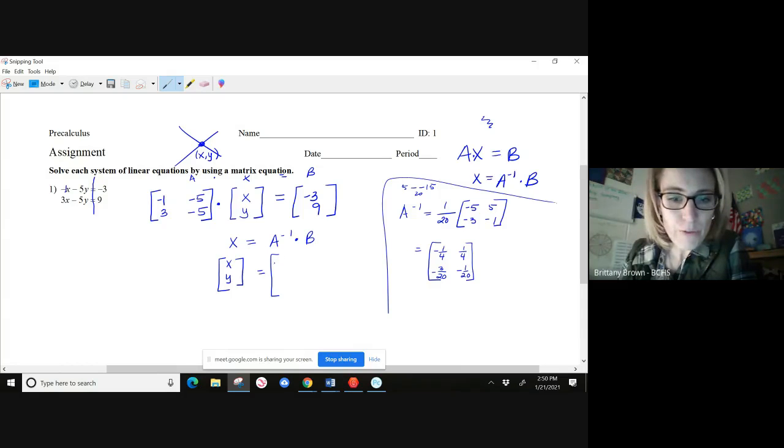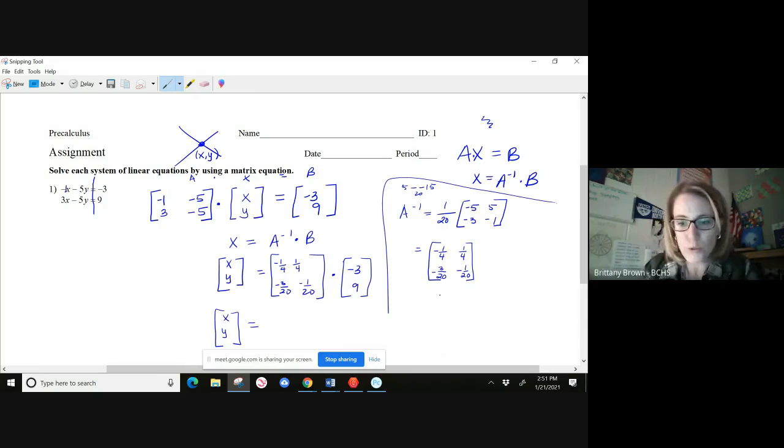Okay, and we always want to use the inverse first. So negative one-fourth, all this good stuff comes over. All right, and we're going to multiply that by this B matrix, which we are using negative 3 and 9. All righty, so remember when you multiply matrices, you multiply rows by columns. So when we multiply 2 by 2 and a 2 by 1, we're going to get a 2 by 1 matrix. So let's set this up.